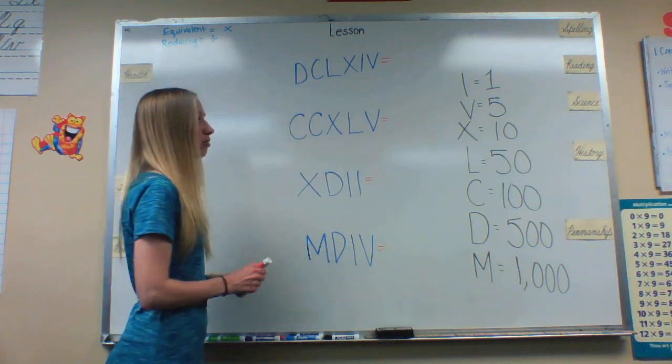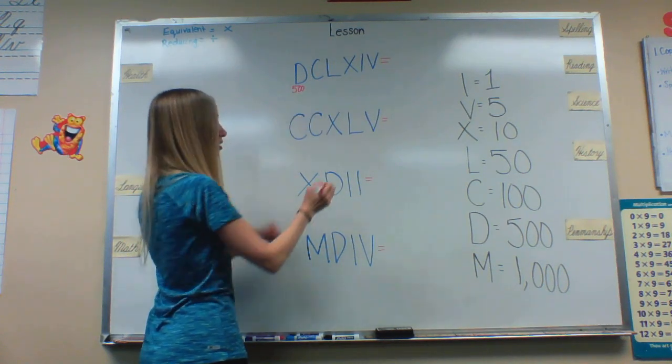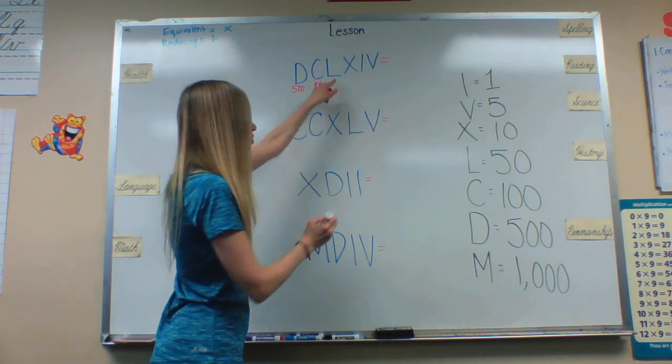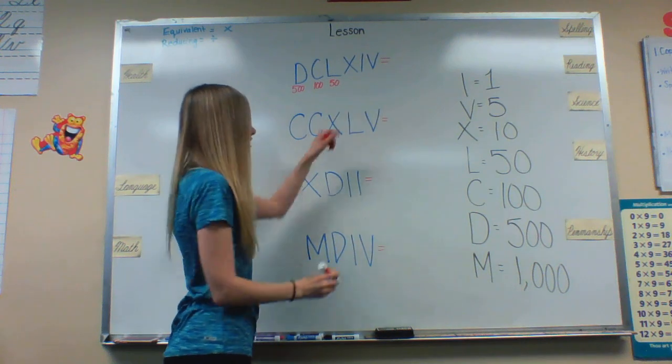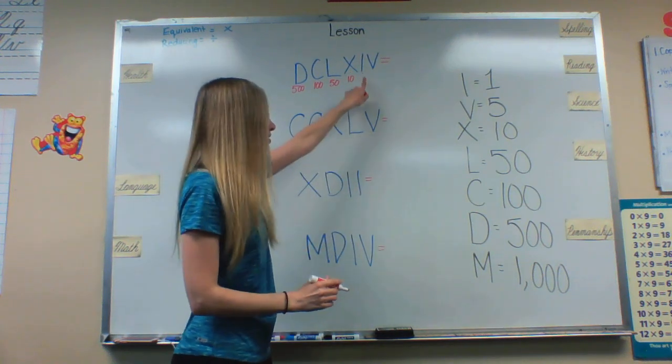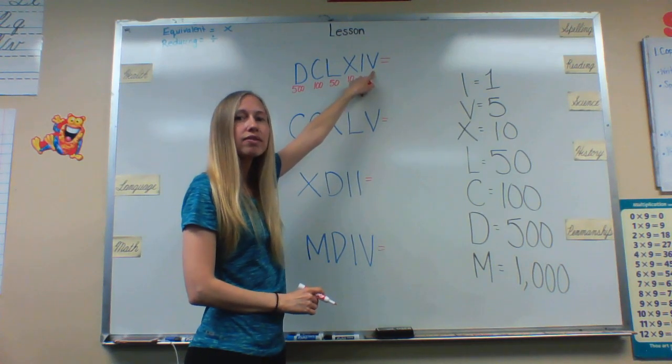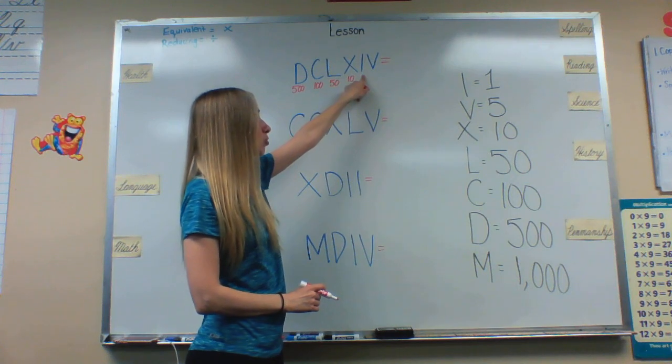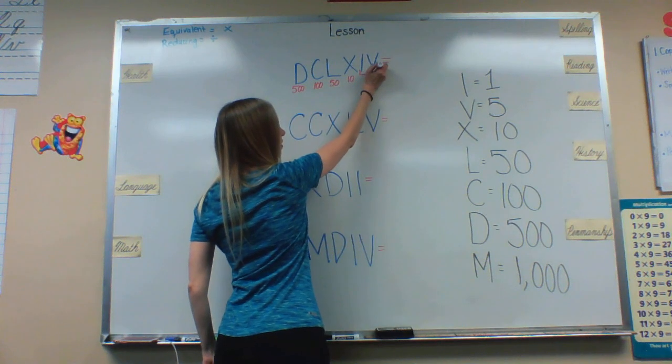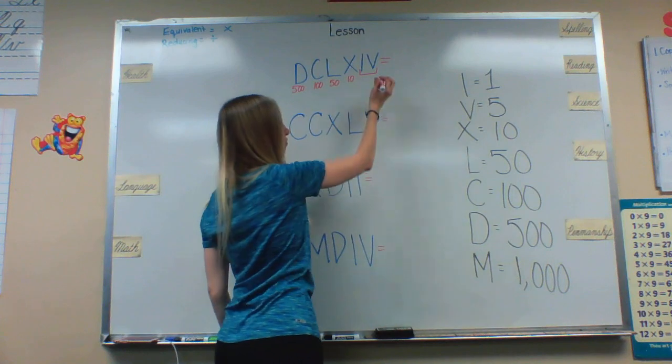D, if we look at our chart, represents 500. So I'll write a 500. C equals 100. L equals 50. And here we have X which equals 10. And then I notice that I have an I which equals 1 and a V which equals 5. When you have a smaller Roman numeral before a larger one you must subtract. So what I do is I branch it off and I know that IV will equal 4 because 5 minus 1 equals 4.